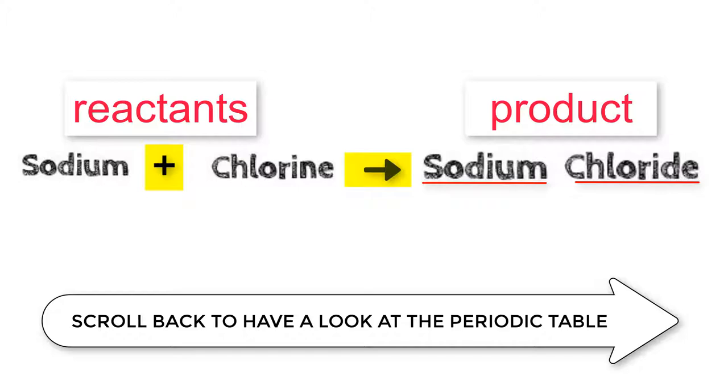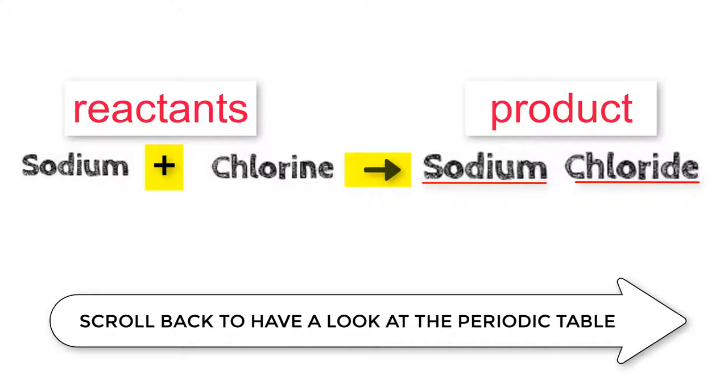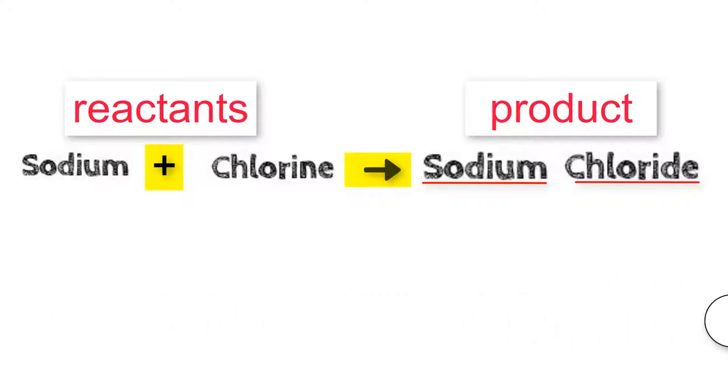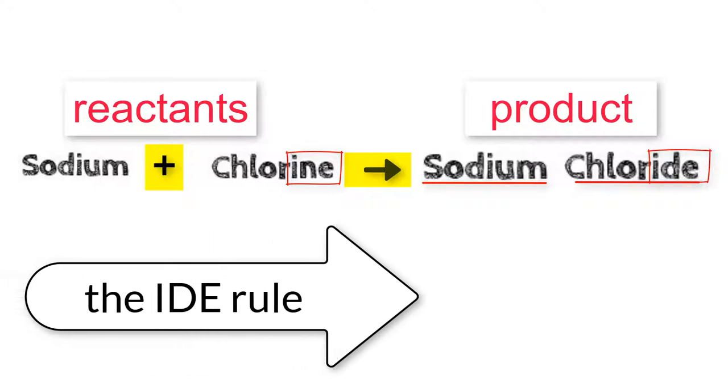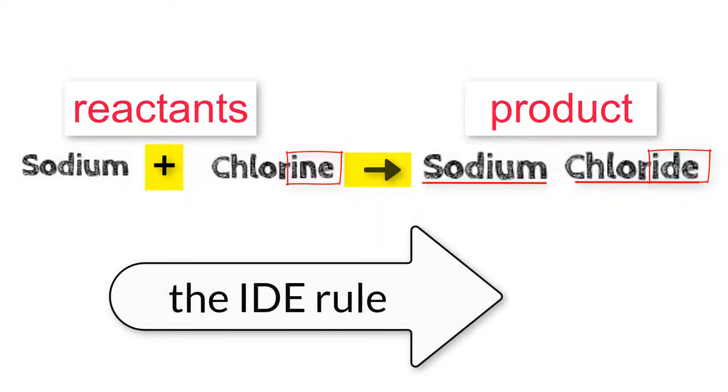Well, that's quite easy. But the second named element's ending changes. Take away the end part of the chlorine, that's I-N-E, and replace it with I-D-E. So this is known as the IDE rule. This works for many of the compounds that are made at this level.